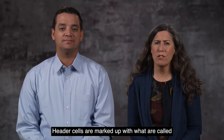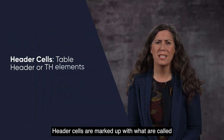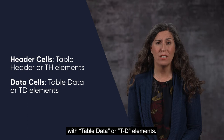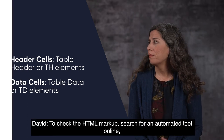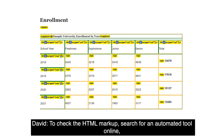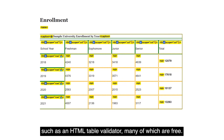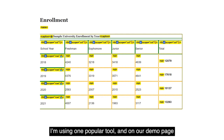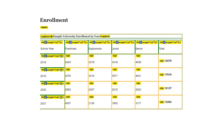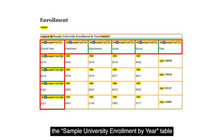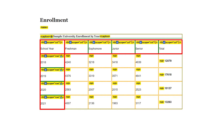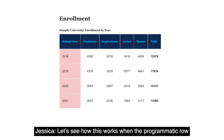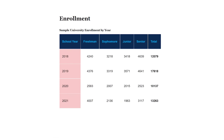To make this work, header cells are marked up with what are called table header, or th, elements, and data cells are marked with table data, or td, elements. To check the HTML markup, search for an automated tool online such as an HTML table validator, many of which are free. Using one popular tool on our demo page designed for accessibility, I can see that both row and column headers of the sample university enrollment by year table have the correct th elements.